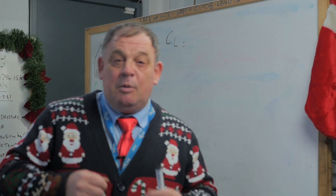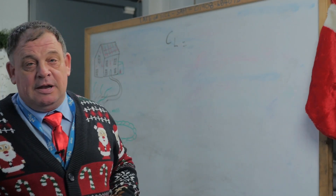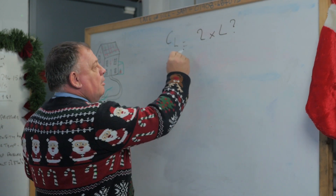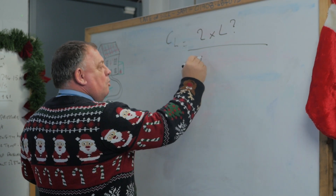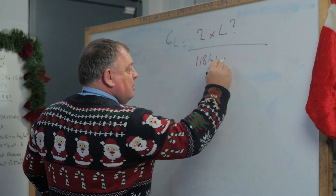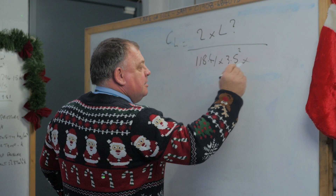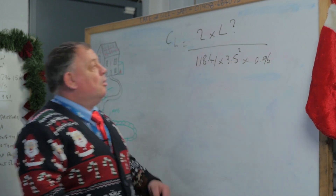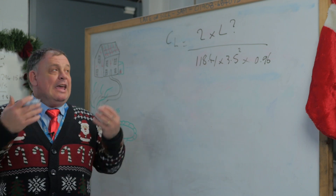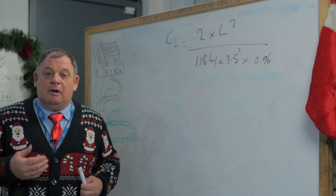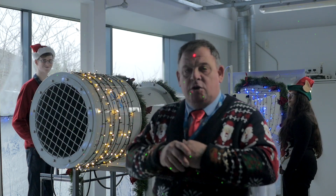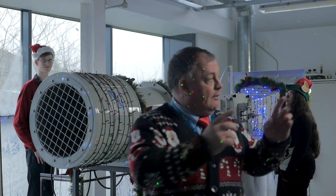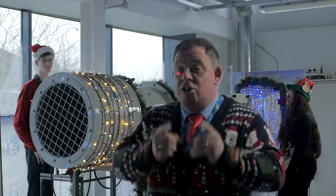Thanks to my little elf technicians, we've now got some figures we can start putting into a formula to prove the reindeer can fly. We've got our coefficient of lift formula, which is 2 times lift — and lift is what we don't know yet — over density, which is 118.41, times the velocity of 3.5 squared, times the area of the reindeer, which is 0.96 meter squared. The only thing we don't know now is lift. Elf one and elf two are going to use the wind tunnel at different angles to find the optimum angle and how much lift our reindeer can create. Then we'll do the maths and prove once and for all that reindeer really, really, really can fly.